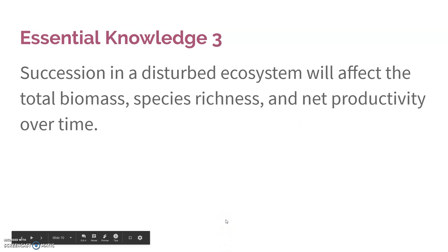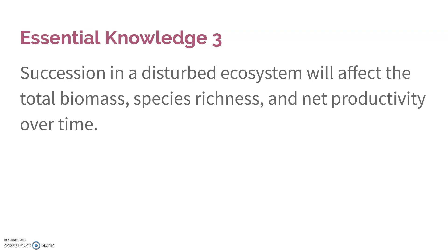Succession in a disturbed ecosystem will affect the total biomass, species richness, and net productivity. That just means every time you're going to get a different outcome — you're not always going to have the same species richness or the same level of biodiversity; you might have more, you might have less. It's basically like taking a game of chess and throwing off all the pieces — every time you start over, it's going to play out a little differently, so you're not always going to get the same setup.